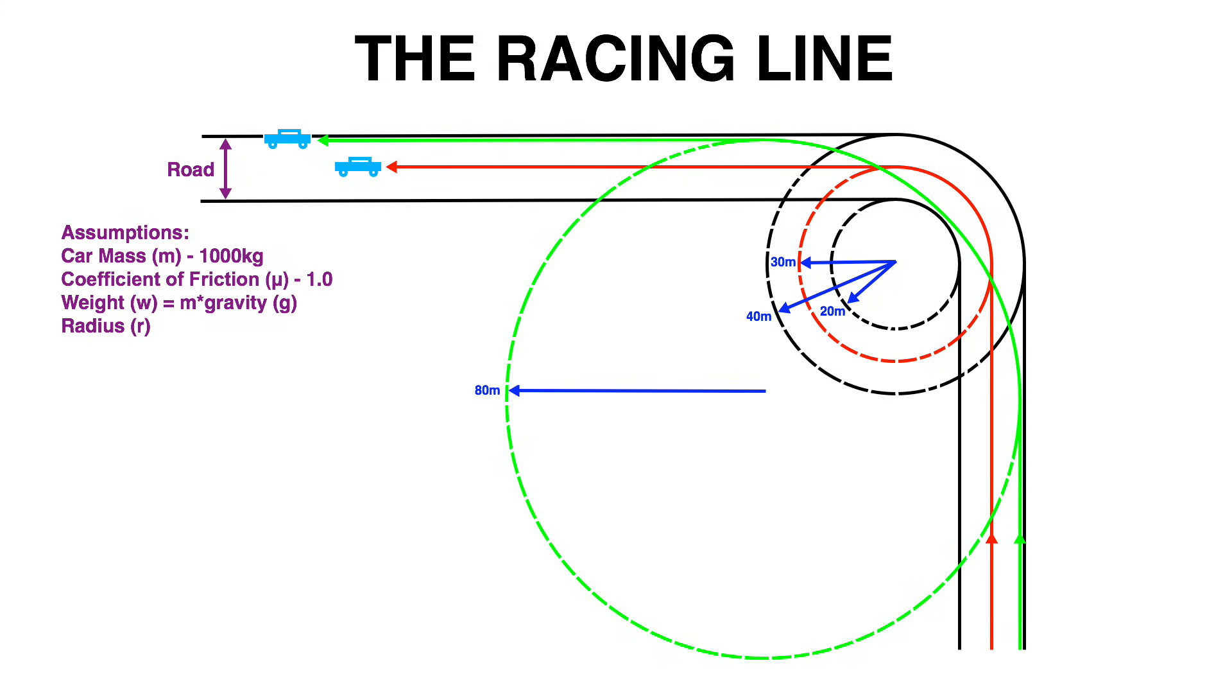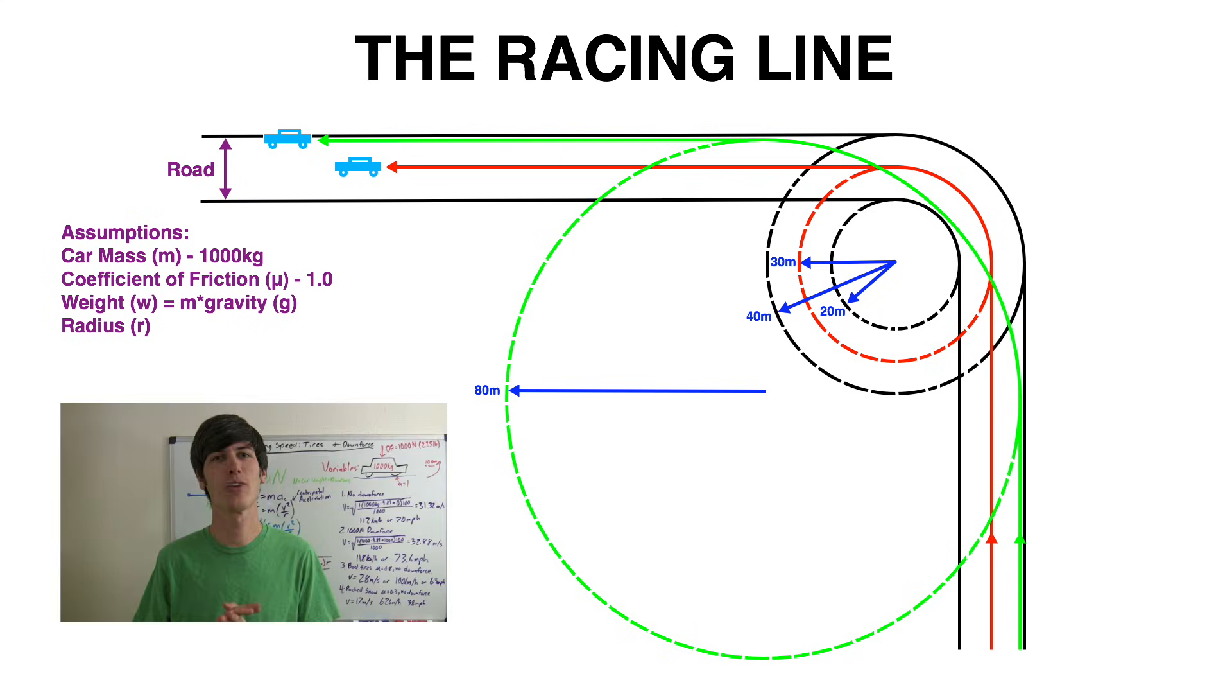Because the cars are limited by the frictional coefficient of the tires and this number is the same in both cases, the car traveling on a larger radius will be able to travel at a faster speed because if it were traveling at the same speed the lateral load on it would be lower. This is explained in my video on cornering speed which you may be interested in checking out.